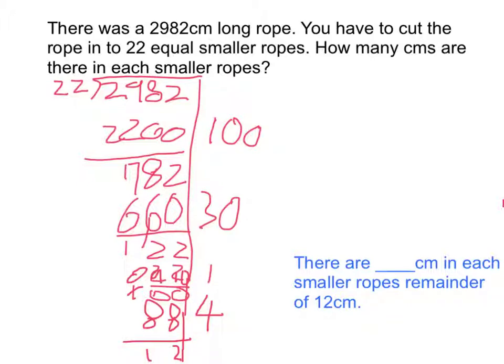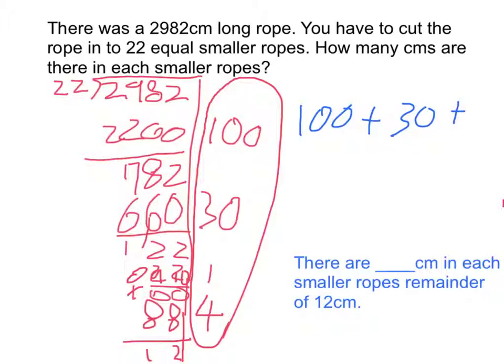And I'm not going to do decimals here, so we'll have to answer with remainders. So we're going to add up all of these numbers: 100 plus 30 plus 1 plus 4, and that equals 135 with remainder of 12.